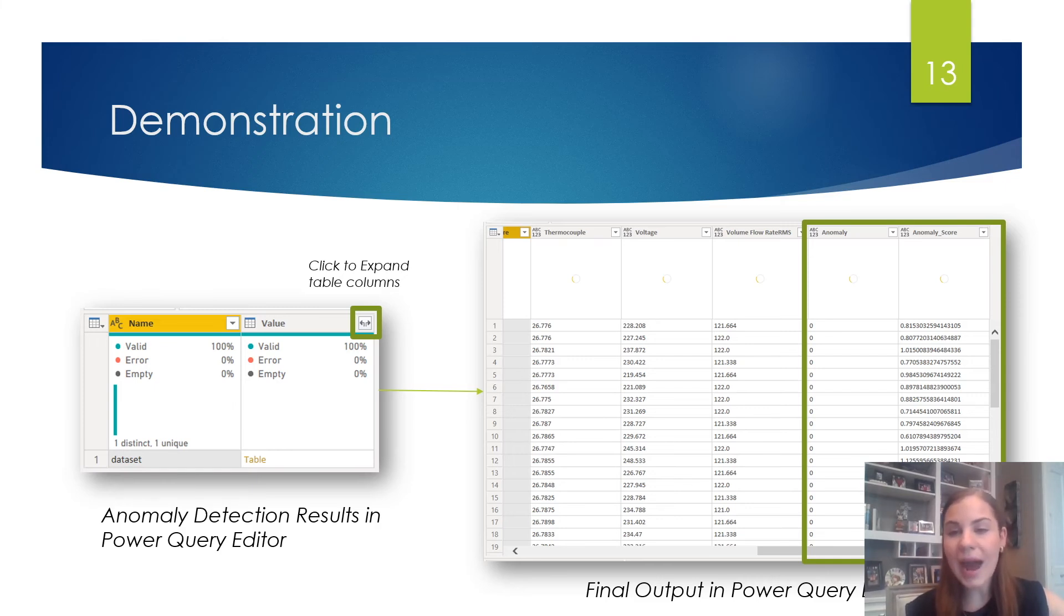You can see that two columns were added to our initial dataset. The first is the anomaly column, which is a label that identifies whether or not an anomaly occurred. So a 0 indicates an inlier and a 1 indicates an outlier. And then the second column that is added is the anomaly score, which simply indicates the value of whether or not an anomaly occurred. So a higher value indicates anomalous behavior and a lower value indicates behavior that is more or less normal.